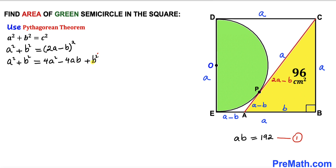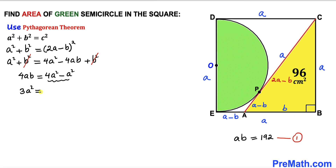We can see b² appears on both sides, so they cancel out. Moving the −4Ab term to the left and −A² to the right, we get 4Ab = 4A² − A², which simplifies to 3A² = 4Ab.